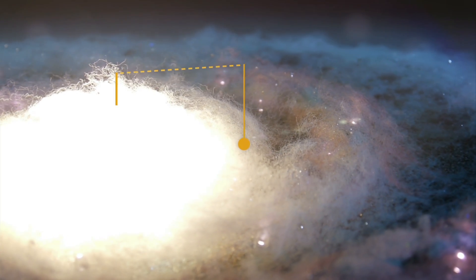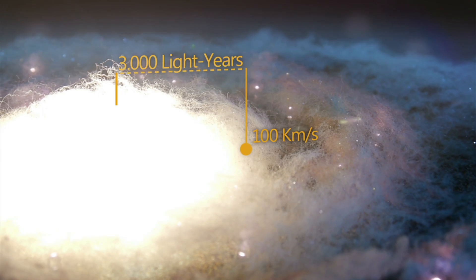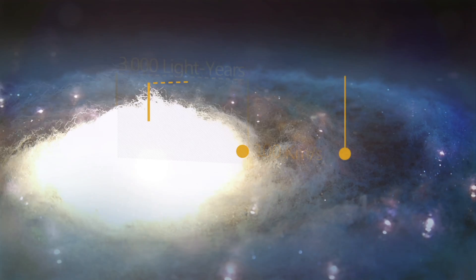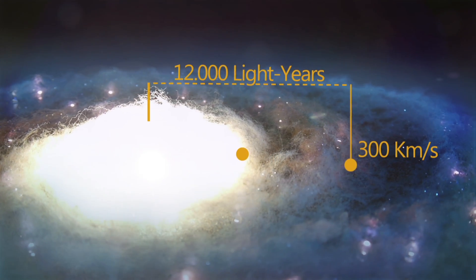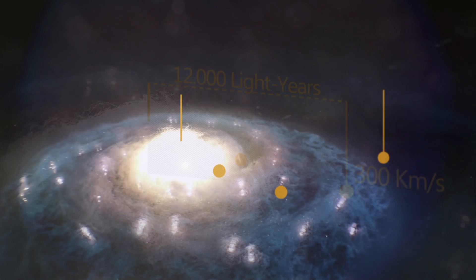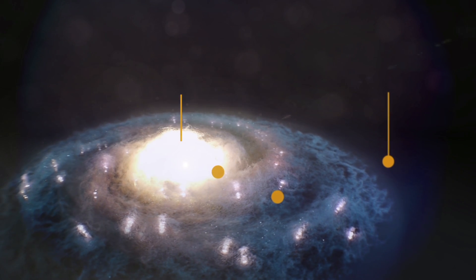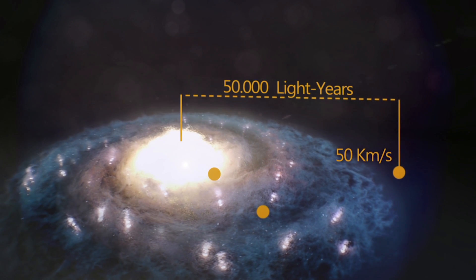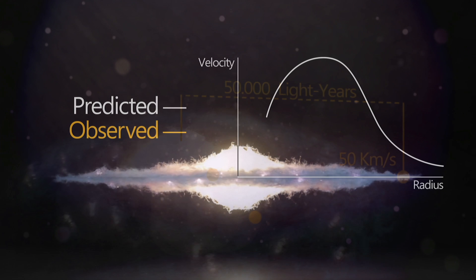Stars very close to the center move slowly. That's because there is very little mass between them and the center of the galaxy to pull them along. Stars a bit further away move faster, as they are being pulled by all of the stars in between them and the center. As we get really far away, the stars are predicted to move slowly again. Their great distance reduces gravity to a gentle tug, so they move leisurely in their orbits.